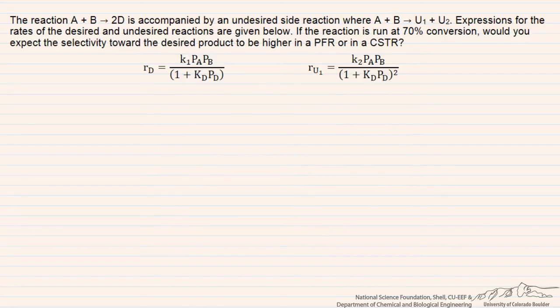To track what's happening with the selectivity, we can expect that the instantaneous selectivity of the desired to the undesired products, which we can define in different ways, but the basic idea is that it's going to be proportional to the rate of the desired product formation over the rate of the undesired product formation.